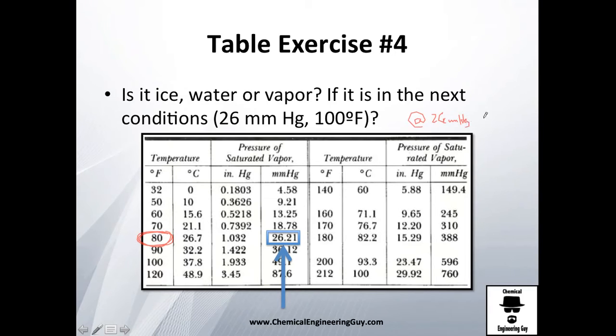So at 26 millimeters of mercury, I got saturation point of 80 Fahrenheit. So what will you expect if you have 90 Fahrenheit or 100 Fahrenheit here? Well of course, if you have the same pressure you are expecting to have a gas or a vapor. So this is definitely a vapor, guys.